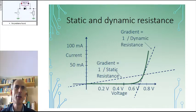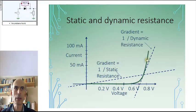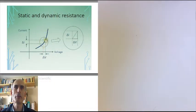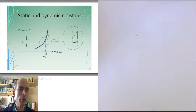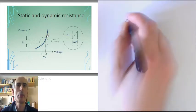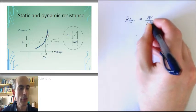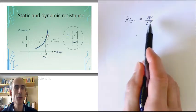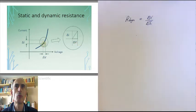The dynamic resistance, on the other hand, is the ratio of a small change in voltage to the small change in current that corresponds to that change in voltage. That corresponds to 1 over the gradient of this characteristic at any point. Zooming in on a small section of the graph, we approximate the curve through that small change as a straight line, and the dynamic resistance R_dynamic is equal to the change in voltage divided by the corresponding change in current. This is true for small changes where we can assume the graph is approximately a straight line.